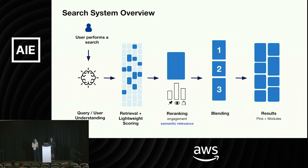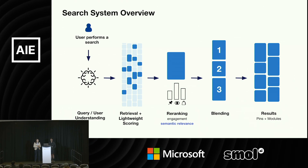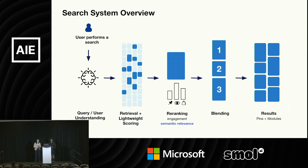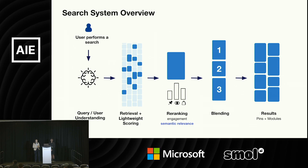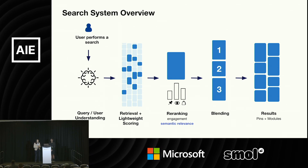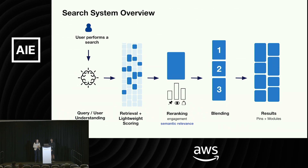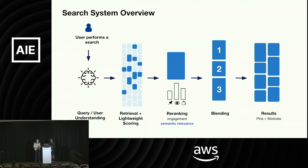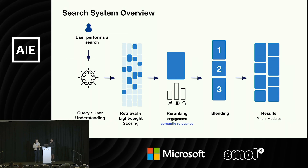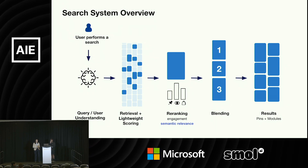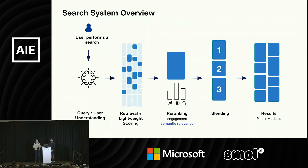This is an overview of how Pinterest search works at the back end. It's similar to many recommendation systems in industry — it has query understanding, retrieval, re-ranking, and a blending stage, and finally produces a relevant and engaging search feed. In today's talk, we'll be focusing on the semantic relevance modeling that happens at the re-ranking stage, and share how we use LLMs to improve search relevance.